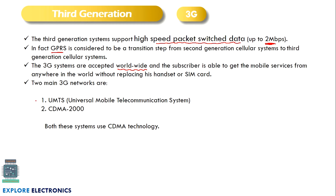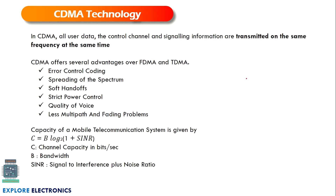The two networks in 3G are named UMTS and CDMA. UMTS stands for Universal Mobile Telecommunication System, and CDMA uses Code Division Multiple Access technique — CDMA 2000 is the name given. In the previous video we saw FDMA and TDMA used in 2G and 2.5G; now in 3G, CDMA is used. In FDMA different frequencies are allocated, in TDMA different time slots are allocated, and in CDMA the same channel is shared using different codes — coding methods are introduced in CDMA.